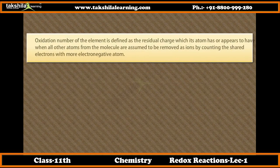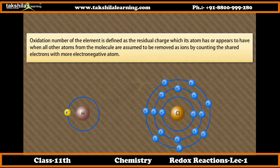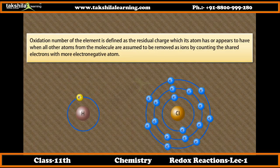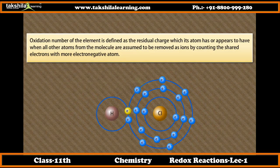Oxidation number of an element is defined as the residual charge which its atom has or appears to have when all other atoms from the molecule are assumed to be removed as ions, by counting the shared electrons with more electronegative atoms. Consider hydrogen chloride: chlorine is more electronegative than hydrogen, so the shared pair is counted towards chlorine. Chlorine gets one extra electron and acquires a unit negative charge; hence oxidation number of chlorine is -1. Hydrogen atom without its electron has a unit positive charge; hence oxidation number of hydrogen in HCl is +1.